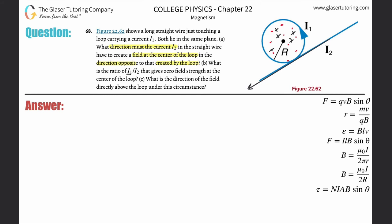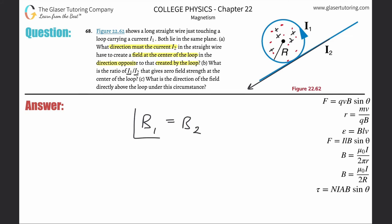Part B asks: what is the ratio I1 divided by I2 that gives zero field strength at the center of the loop? For zero magnetic field strength, the magnetic field produced by I1 must equal the magnetic field produced by I2. Now, I1 flows in a loop and I2 flows in a straight wire, so we have two different formulas for magnetic field strength corresponding to each shape.